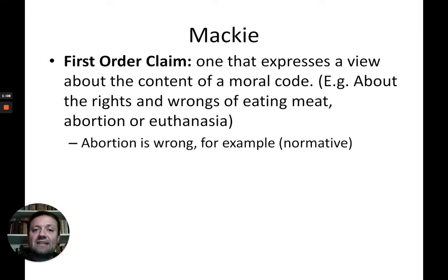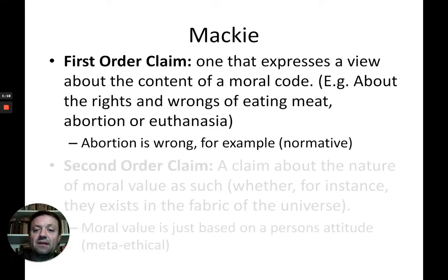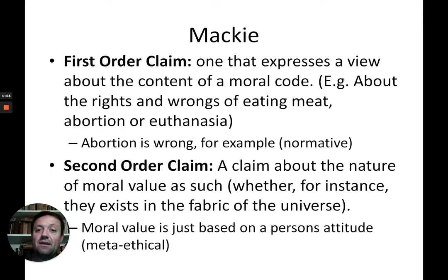To begin with, let's get clear about some terminology. Mackie uses the terms first-order claim and second-order claim in his book. A first-order claim is essentially a normative claim — a claim about what is right and wrong. For example, 'abortion is wrong' is a normative claim. A second-order claim, by contrast, is a meta-ethical claim. For example, you might claim that moral value is just based on somebody's personal attitude towards an action or a situation. It's not telling you what is right and wrong like a first-order claim; it's telling you about the nature of a moral judgment.